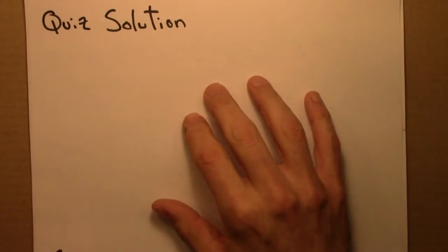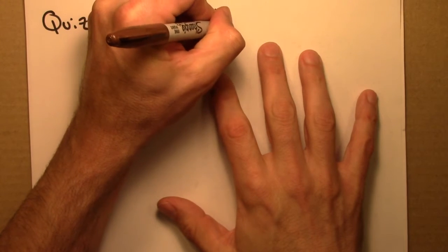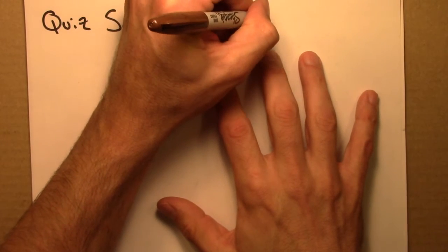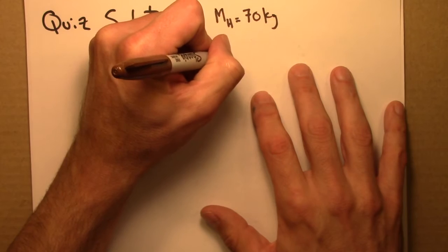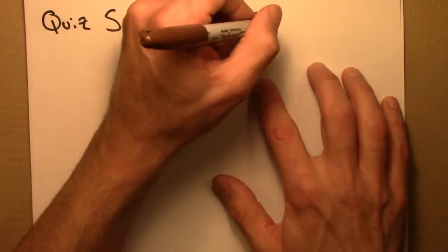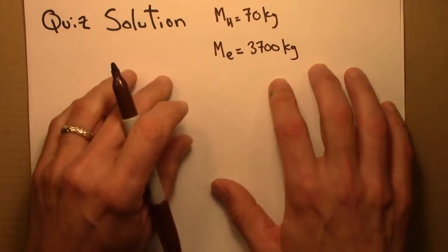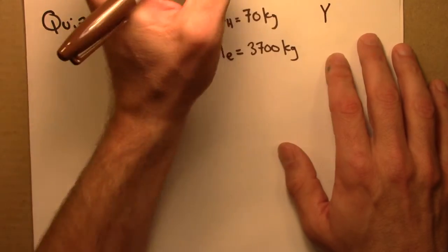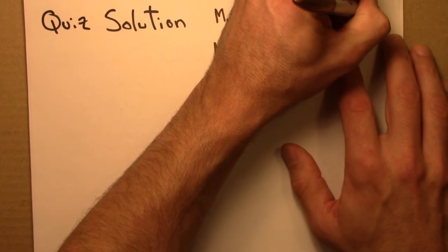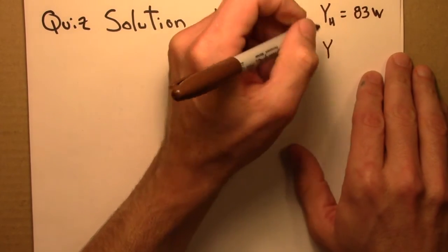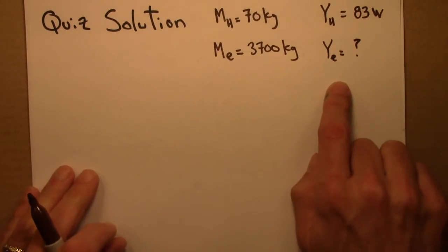So here's our solution to the quiz. We're given that the mass of a human is 70 kilograms, and the mass of the elephant is a lot larger, 3,700 kilograms. We're also given that the metabolic rate Y for the human is 83 watts, and we're trying to figure out the metabolic rate of the elephant.